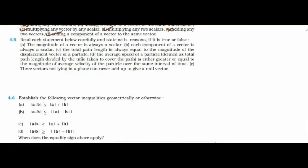Question five: state true or false. The magnitude of a vector is always a scalar — this is true, because if you take only the magnitude you get a scalar quantity. Each component of a vector is always scalar — this is false, because a component of a vector is also a vector.